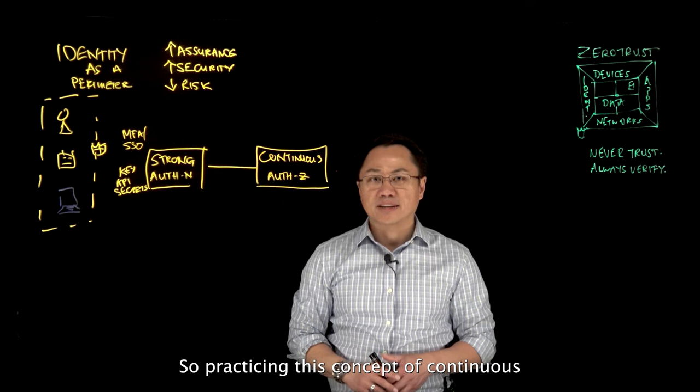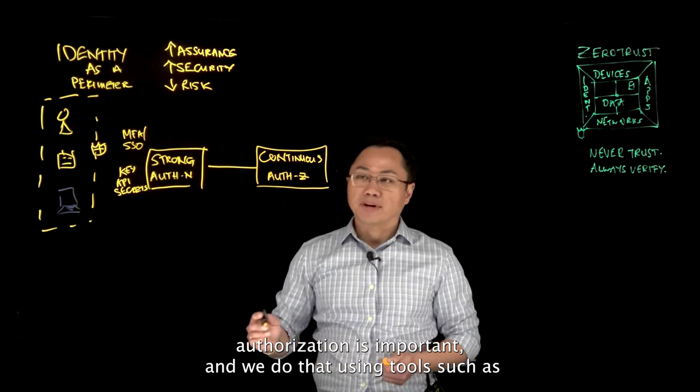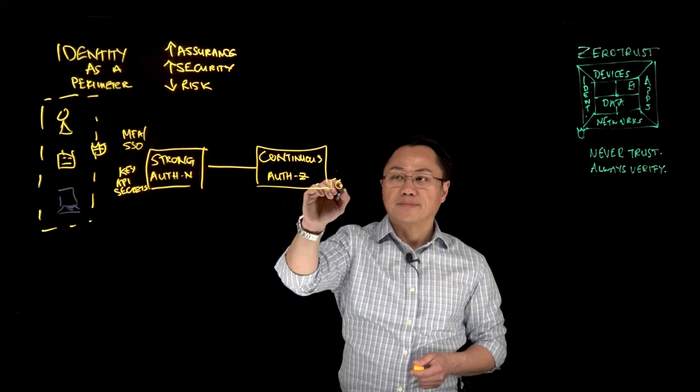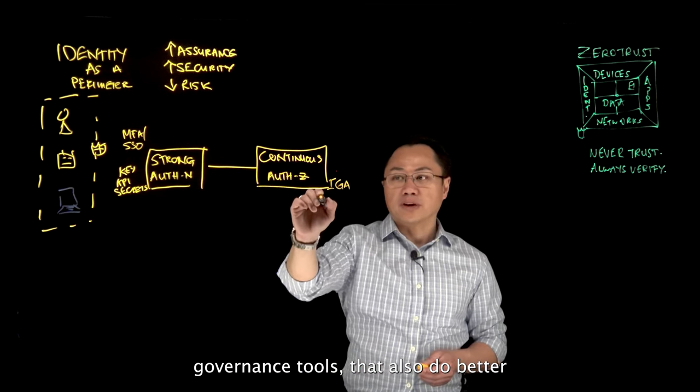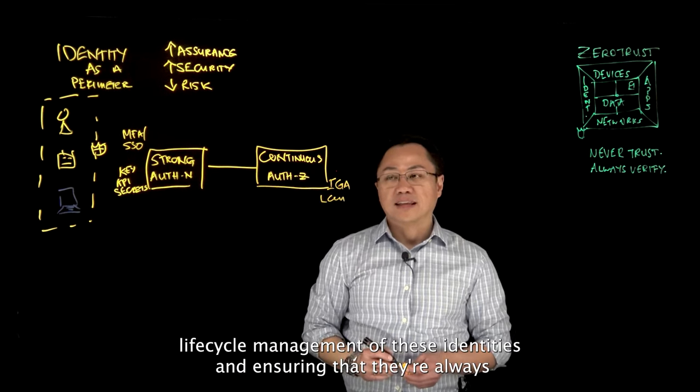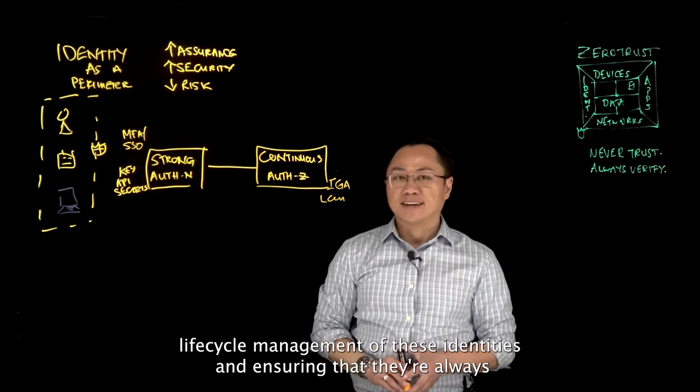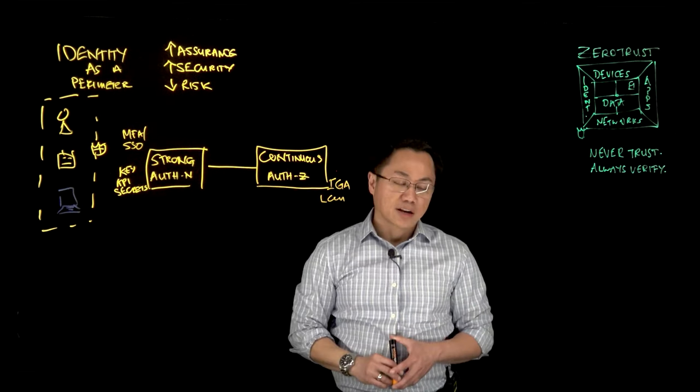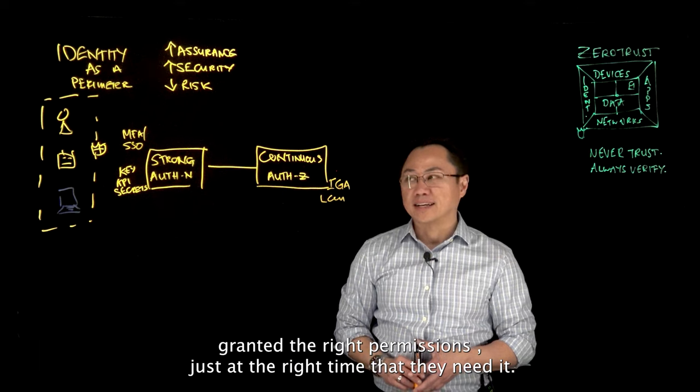So practicing this concept of continuous authorization is important, and we do that using tools such as governance tools. We could also do better lifecycle management of these identities and ensuring that they're always granted the right permissions just at the right time that they need it.